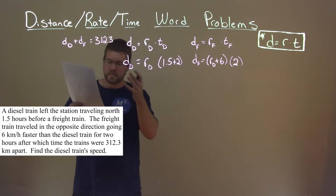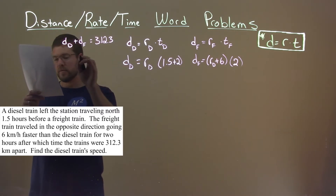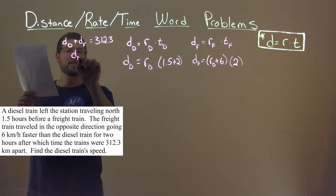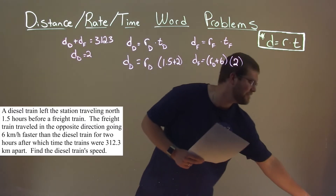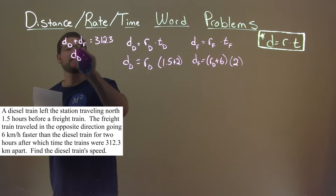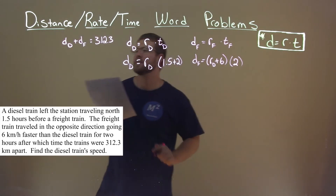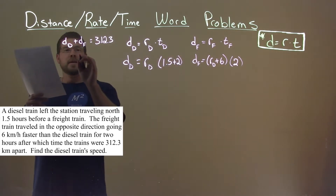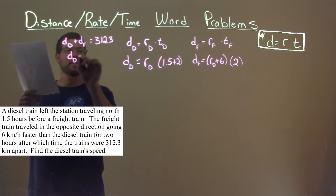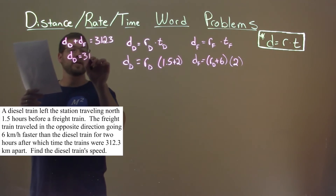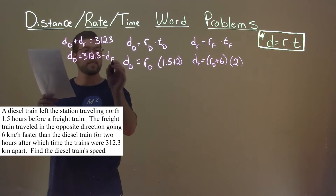We can adjust this by subtracting the distance of the freight train from both sides, so the distance of the diesel train is equal to 312.3 minus the distance of the freight train.